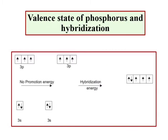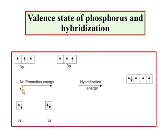Now let us check the valence state of phosphorus for sp3 hybridization. The electronic configuration of phosphorus is 3s2 3p3. For sp3 hybridization in phosphorus, the valence state shows three unpaired electrons and one electron in the s orbital. No electron promotion is required, so no promotion energy is needed.